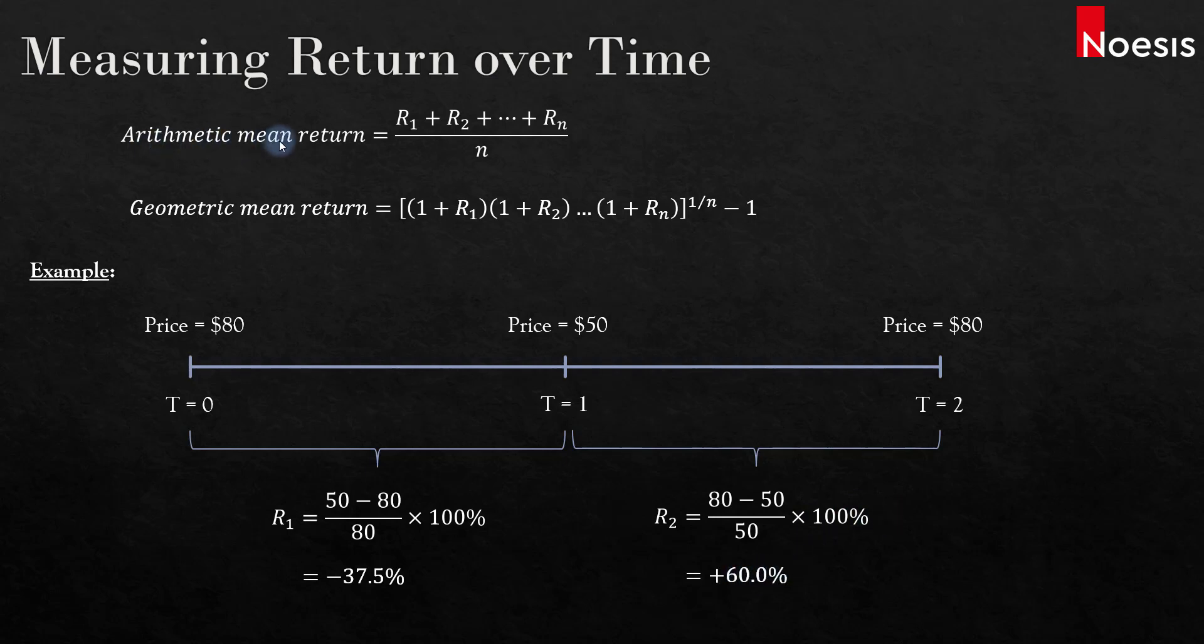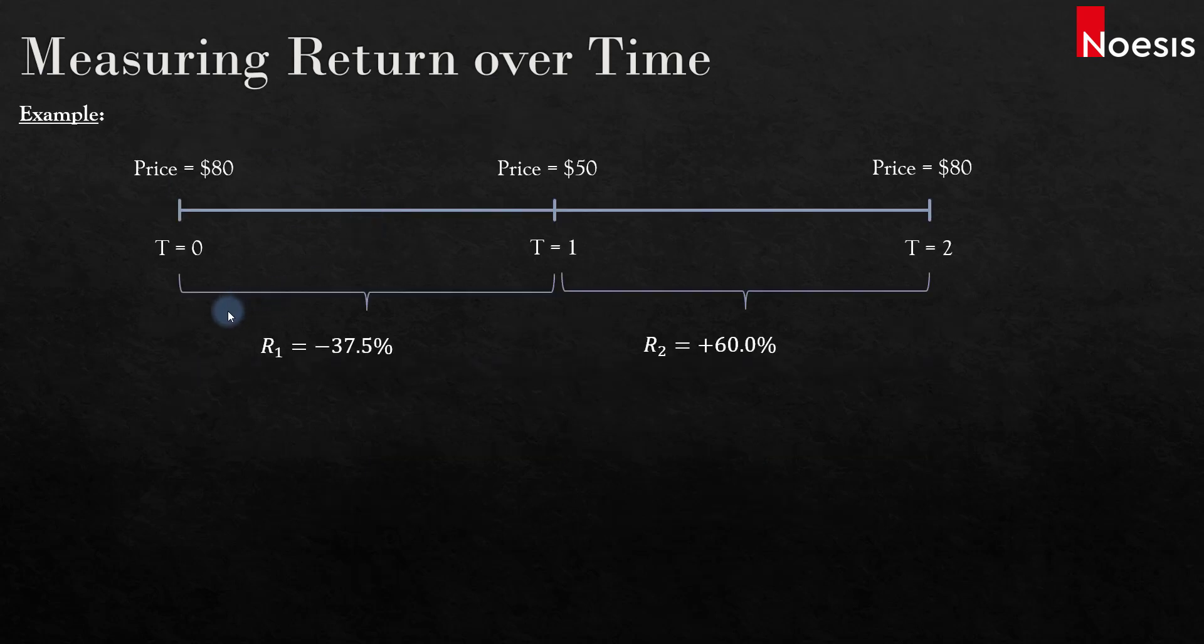Using the two formulas, we calculate the mean returns. For arithmetic mean return, we take the sum of the two returns and divide by 2. Averaging these two returns gives us 22.5%, telling us that on average, the investment is generating a return of 22.5% per year.